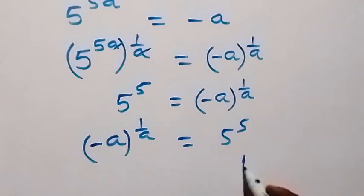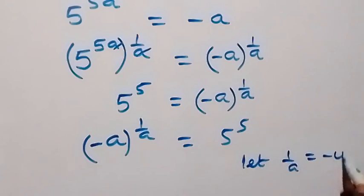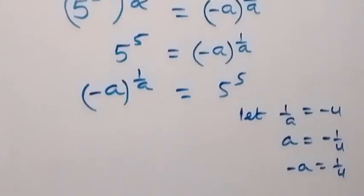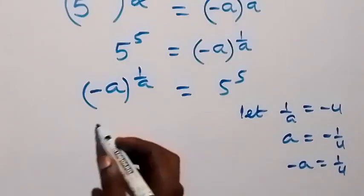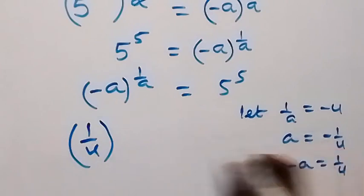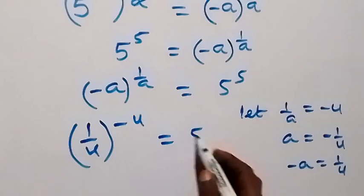Let's use a change of variable here. Let 1 over a in the power be equals to minus u. From here, it implies that a will now be equals to minus 1 over u. And also, minus a is now equals to 1 over u. When we make these changes, we can have 1 over u as minus a, raised to power 1 over a — that is, minus u — now equals to 5 raised to power 5.